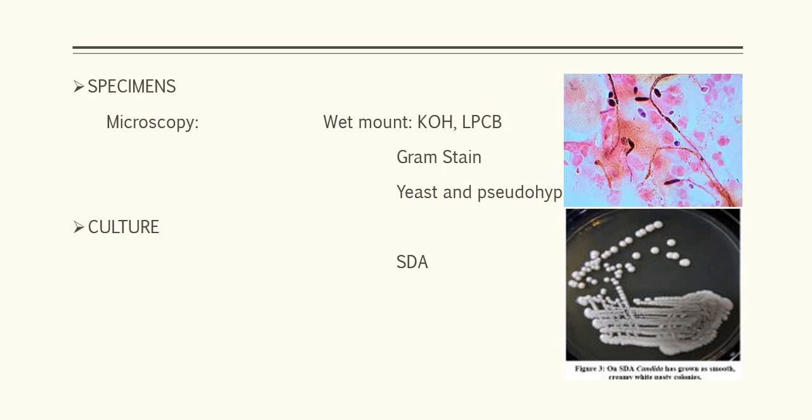What type of culture is used to grow Candida? That is SDA (Sabouraud Dextrose Agar). There are several differential agars available in which specific Candida can be grown. SDA is best for Candida. On SDA, Candida grows as smooth, creamy white textured colonies.